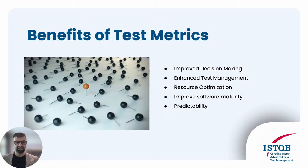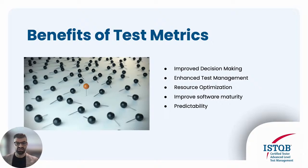Metrics streamline test processes, improving planning, execution, monitoring, and reporting. Effective use of metrics ensures optimal allocation of resources, reducing waste and increasing efficiency. Tracking metrics helps identify and address defects early, leading to more robust and reliable software. Metrics also allow for better forecasting and planning, reducing uncertainties and ensuring smooth project execution.